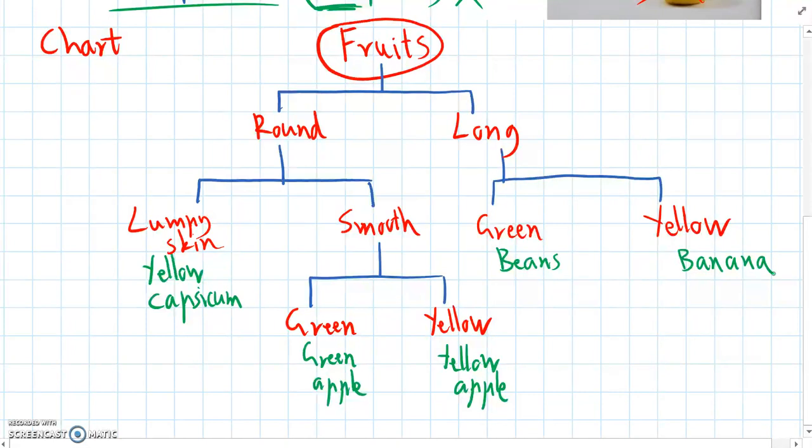OK, so here is our finished dichotomous key. We've classified all five of the fruits. And this key would let anybody classify these five fruits to find the name of them, even if they'd never learned the name of the fruit before.